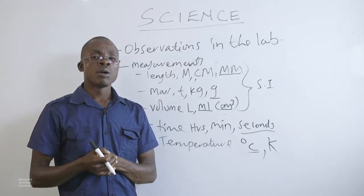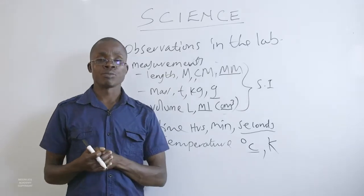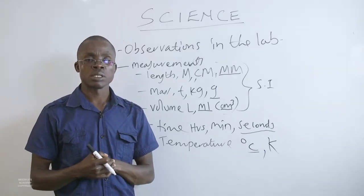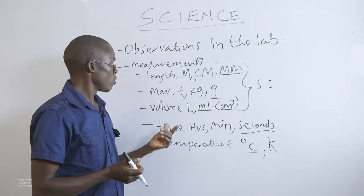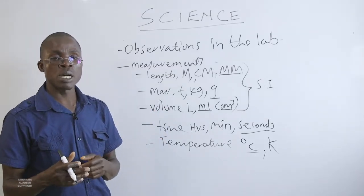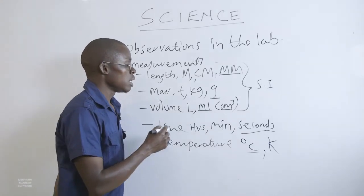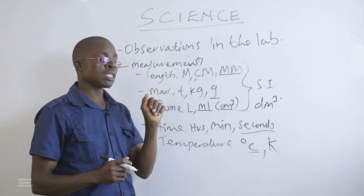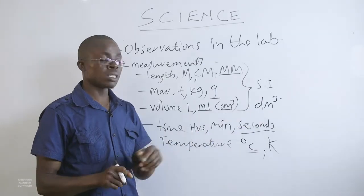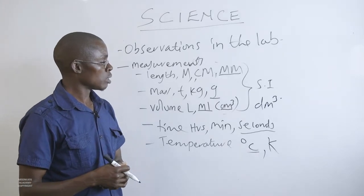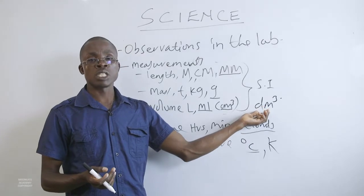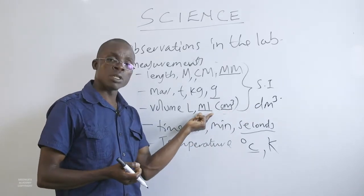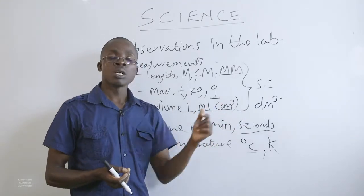There is something to clarify about volume. For gases, there is another unit you may encounter later in your study of science — decimeter cubed. One decimeter cubed equals a thousand cubic centimeters or a thousand milliliters, which is equal to one liter. So one liter is the same as one decimeter cubed. This unit is less common in standard lab work but is commonly used when dealing with gases.